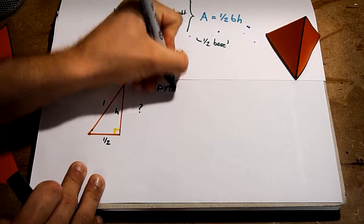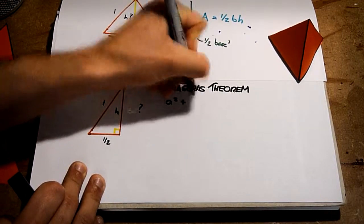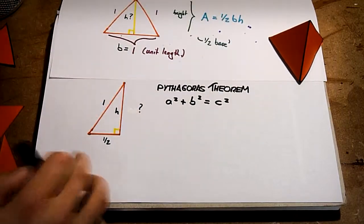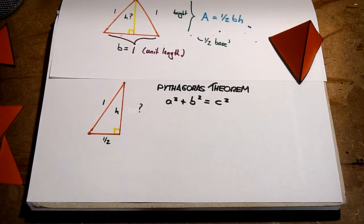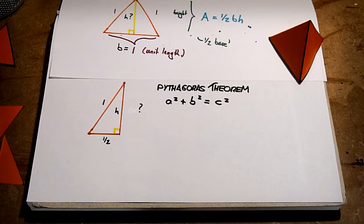By using Pythagoras' theorem, we know that the square of the two sides is equal to the square of the hypotenuse, or a squared plus b squared equals c squared.